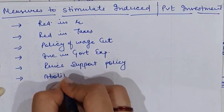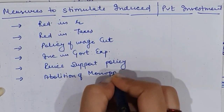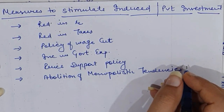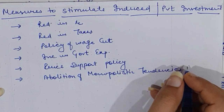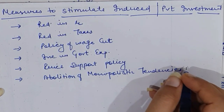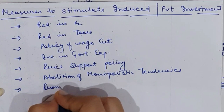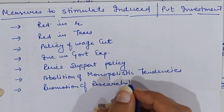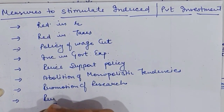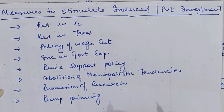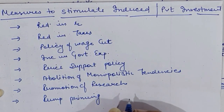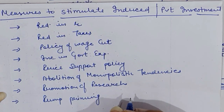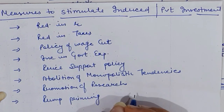Sixth: abolition of monopolistic tendencies — monopolistic tendencies should be abolished from the economy so that fresh investment can take place. Seventh: promotion of research — research activities should be promoted so that new innovations occur in the country and investment is made to adopt modernization. And last: pump priming — pump priming is an initiative by government. During depression, the government makes some investments, which lead the economy back to normal level. These are some measures that stimulate and induce private investment in an economy.